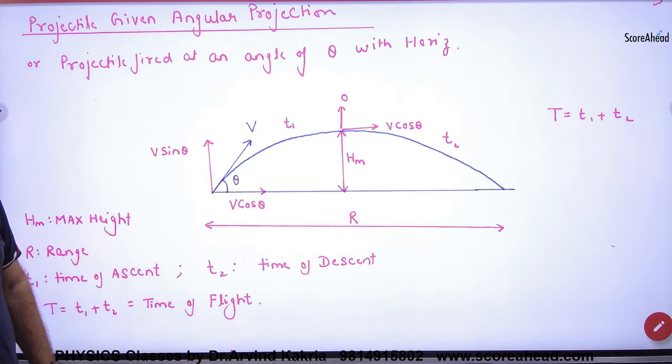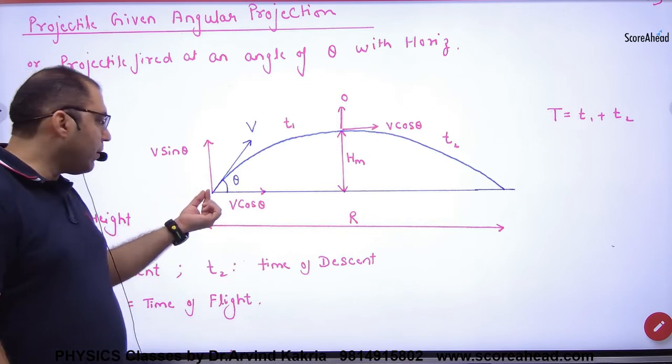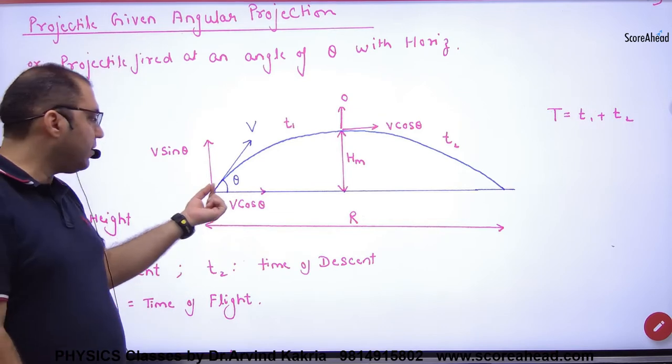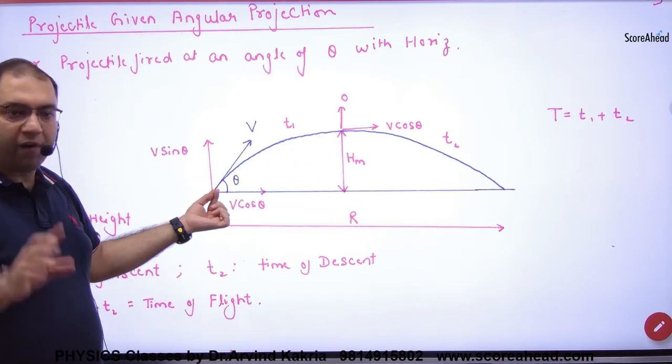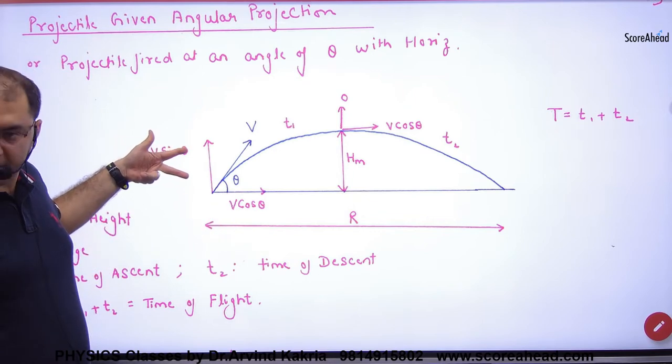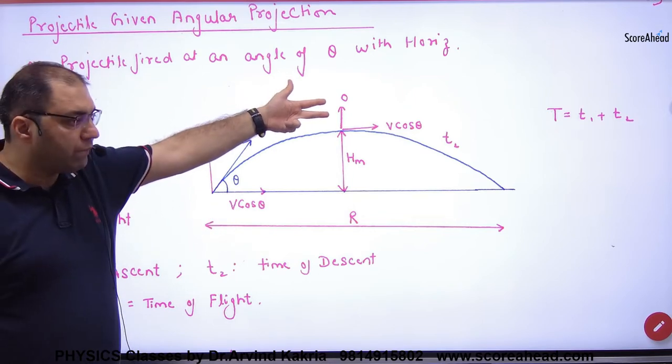So in time of ascent we work when the body came from here, then the body will take it from here. Then when the body was here in the y-axis, initial vertical velocity is vsinθ, final velocity is 0.